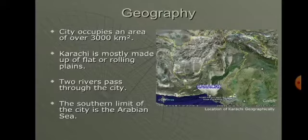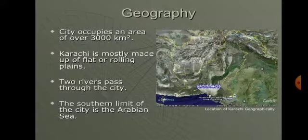Let me explain you again. The total area of the city is 3,000 km². Karachi is mostly made up of flat or rolling plains. The two rivers that pass through the city are the River Malir and the River Lehari. The southern limit of the city is the Arabian Sea.